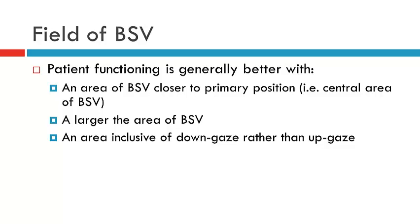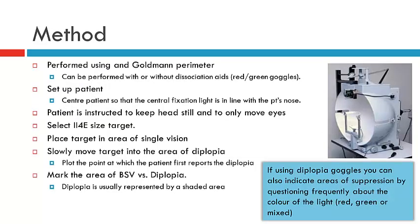That gives you a little bit of an appreciation of how the area of BSV can translate into some level of appreciation for functional impact for the patient. How do we go about assessing the patient? We use the Goldmann and we set up the patient as we would usually for a visual field examination, but this time we'll centre them on the actual instrument rather than trying to put the right eye or the left eye into fixation. We usually use A24E.